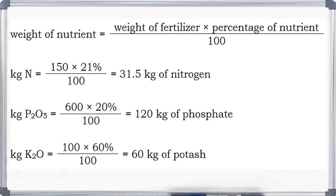Weight of nitrogen equals 150 times 21% divided by 100. The result is 31.5 kg of nitrogen. Weight of phosphorus equals 600 times 20% divided by 100. The result is 120 kg of phosphorus. Weight of potassium equals 100 times 60% divided by 100. The result is 60 kg of potash.